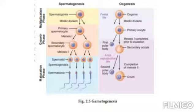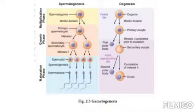You should remember the sequence: primary spermatocytes, which are diploid, undergo the first meiotic division to form secondary spermatocytes. Secondary spermatocytes undergo the second meiotic division to form spermatids. The spermatids are then transformed into mature spermatozoa or sperms by the process called spermiogenesis. Sperms are finally released into the cavity of the seminiferous tubules by a process called spermiation.